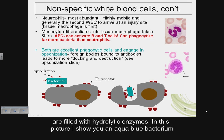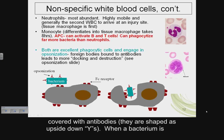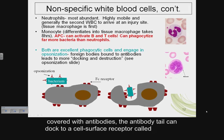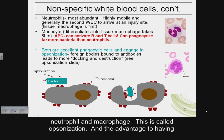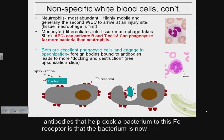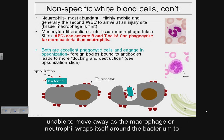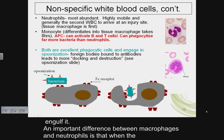These cells wrap around foreign particles, internalize them, and then use lysosomes to break down the particulate matter. Lysosomes are cytoplasmic vesicles filled with hydrolytic enzymes. In this picture, an aqua-blue bacterium is covered with antibodies shaped as upside-down Y's. When covered with antibodies, the antibody tail docks to the FC receptor on the neutrophil or macrophage — this is opsonization — and the bacterium is now unable to move away as the cell engulfs it.